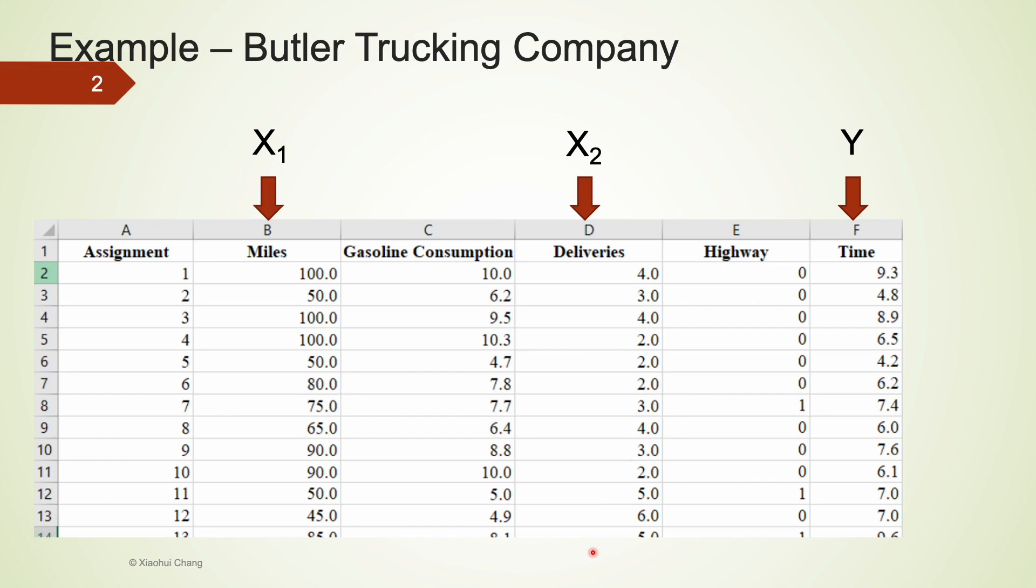Let's take a look at the same trucking company example we have analyzed in simple linear regression. This time, I will consider two independent variables or explanatory variables: miles and deliveries. Again, time is the dependent variable or response variable in this analysis. That means we try to use both miles and deliveries to predict time through a linear model. Is a linear model appropriate for these variables? I'd like to point out that all of these three variables are numerical or quantitative variables. In another video, I will consider a situation where the independent variables are categorical.